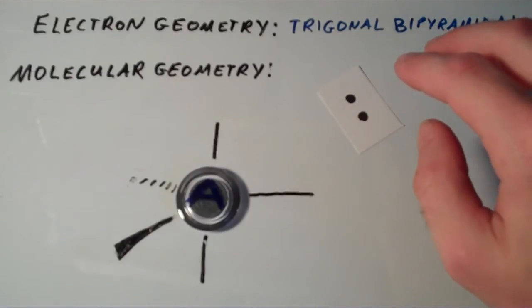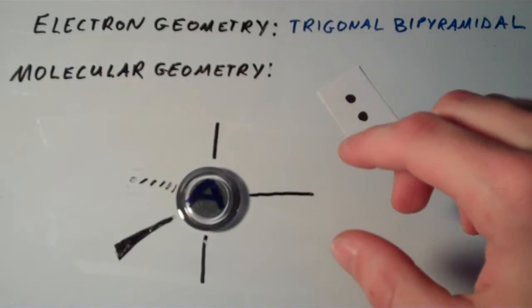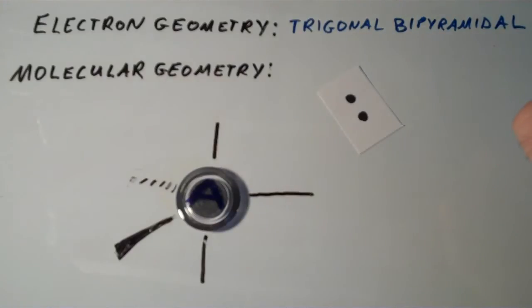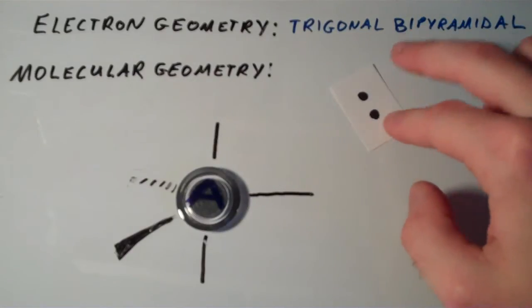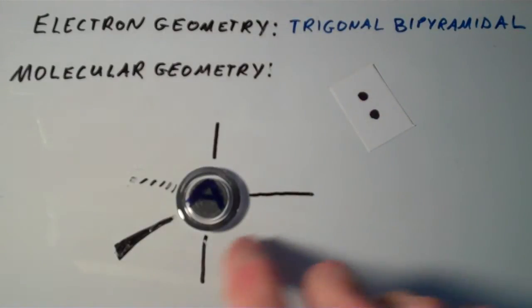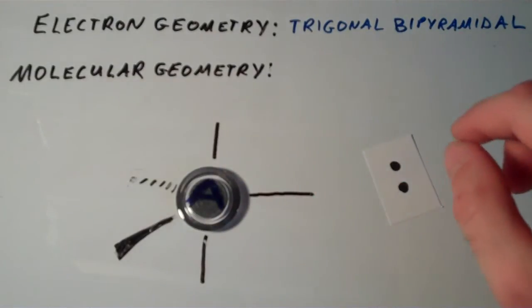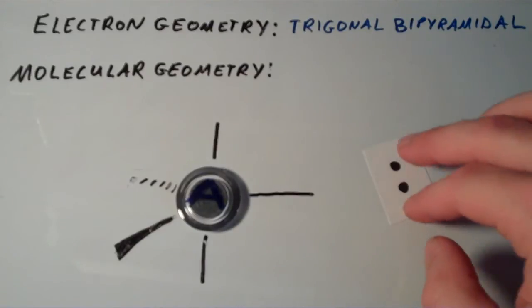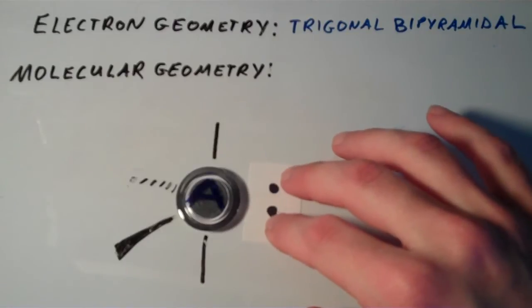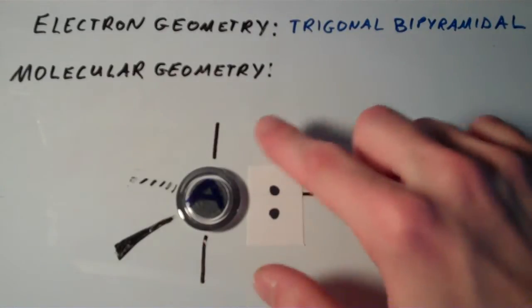It turns out that the lone pairs are actually going to occupy the equatorial positions. And the reason why is because the repulsions between lone pairs and bonding pairs are actually greater than the repulsions between just bonding pairs. So because the angles between these equatorial positions are 120 degrees, and the angle between an axial and an equatorial position is 90 degrees, putting the lone pair in the equatorial position minimizes the repulsion between these bonding pairs and this lone pair.